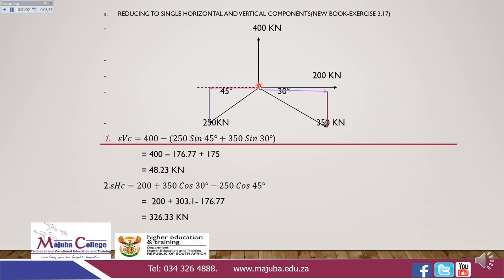We are also given a 250 kilonewton force in the west of south direction, and a 350 kilonewton force in the east of south direction. We need to do construction on these forces. For the 250 kN force, we construct a horizontal component towards west and a vertical component towards south. For the 350 kN force, we construct a horizontal component towards east and a vertical component towards south.